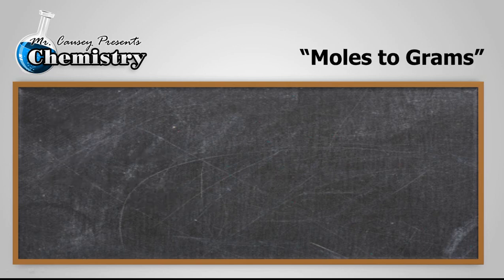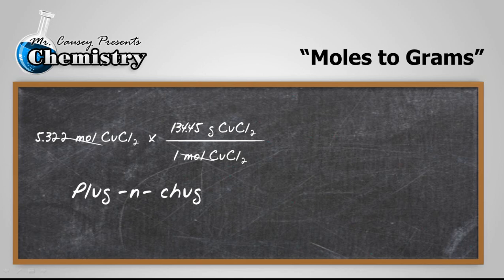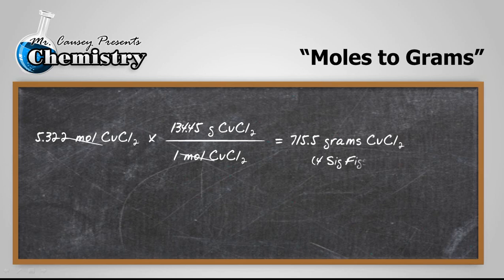Now let's change the moles to grams. 5.322 moles of copper(II) chloride, multiply that by the molar mass, and the moles cancel out. Take your calculator and plug and chug. It's just going to be 5.322 times 134.45, and we get 715.5 grams of copper(II) chloride using 4 sig figs.